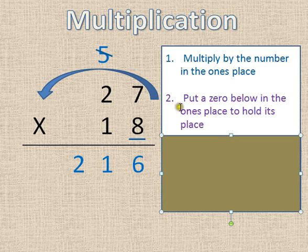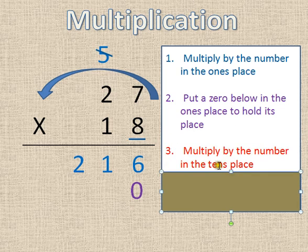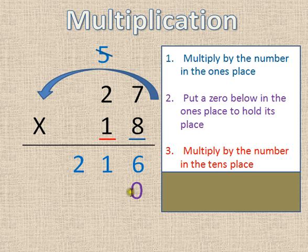Step two is put a zero below the ones place to hold its place. So I'm going to bring my purple zero right down here. That's what it means by putting it under my ones place to hold its place. And the reason why I'm doing that is because step three says multiply by the number in the tens place. So since I'm multiplying by the number in the tens place, I'm multiplying by groups of ten actually. So I don't need anything in my ones because I'm multiplying by tens. So this zero just holds its place.